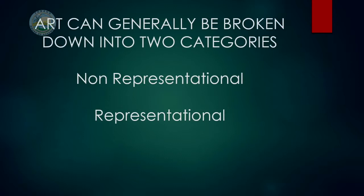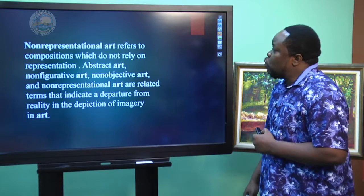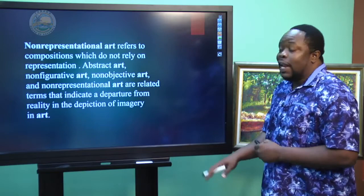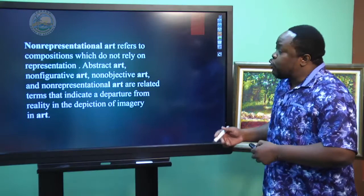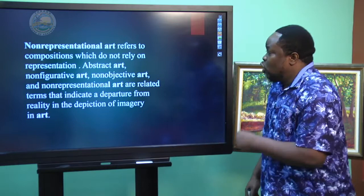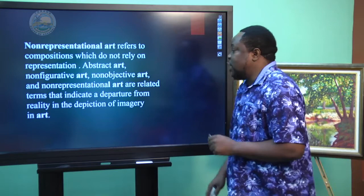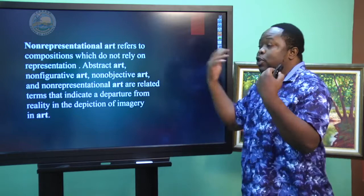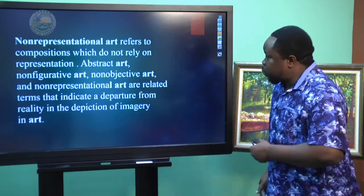Art can generally be categorized into two main categories: one, non-representational, and two, representational. Non-representational art refers to compositions which do not rely on representation — in other words, they don't look like anything. Abstract art, non-figurative art, non-objective art, and non-representational art are related terms that indicate a departure from reality in the depiction of imagery. So it's something that is imaginative — it is not real.